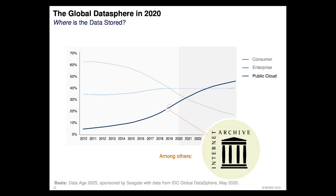The Internet Archive belongs to such a public cloud — it is basically a public cloud provider for all things digital. And it is also the only non-commercial place where a huge and perhaps even representative chunk of the web can be found.